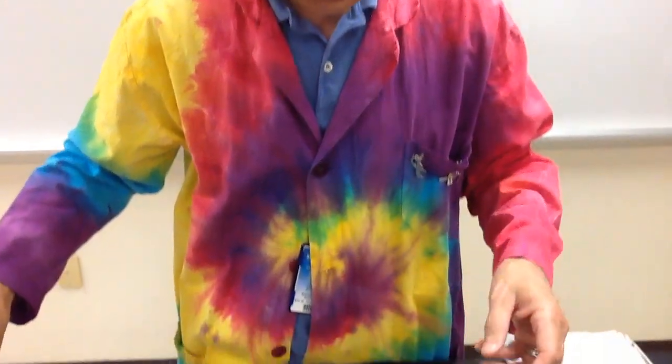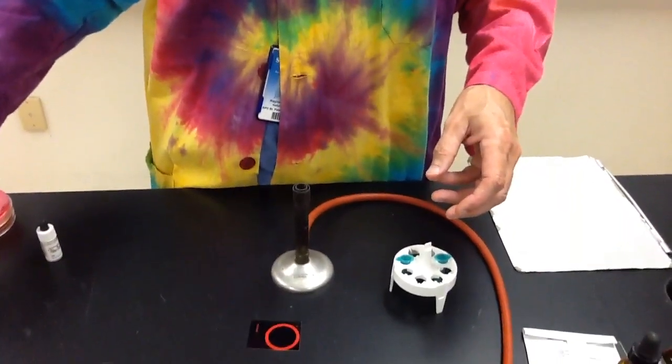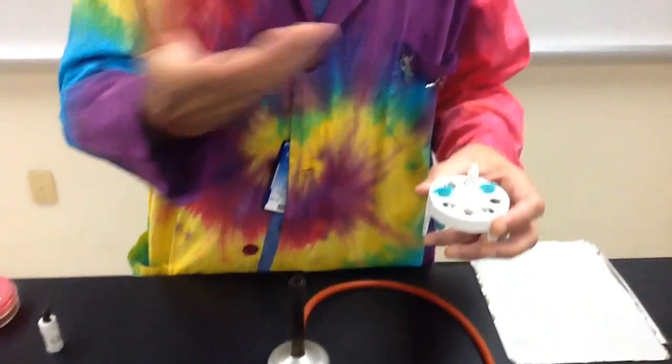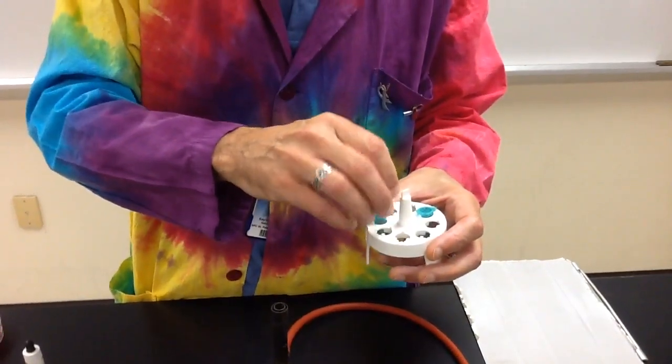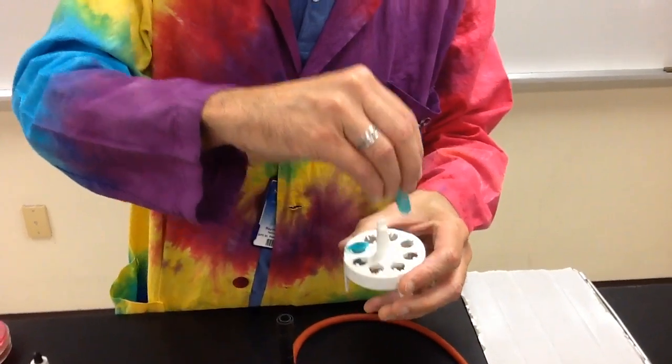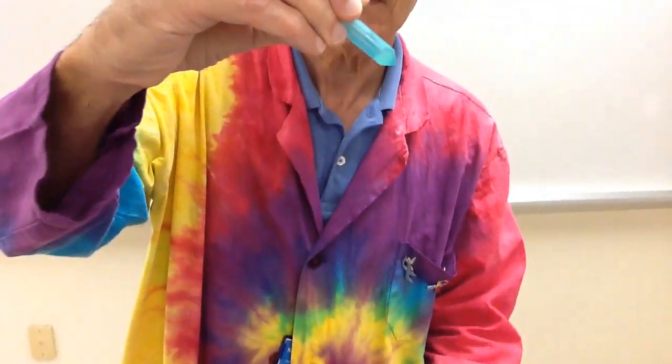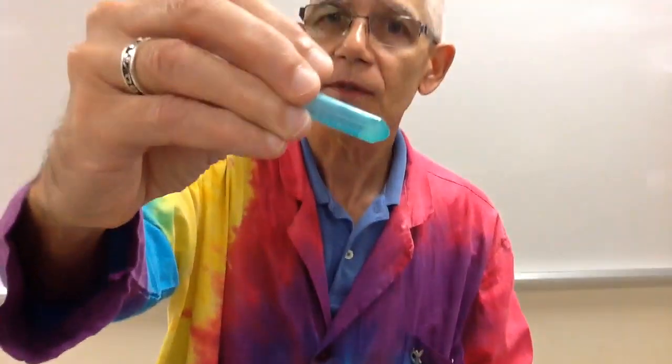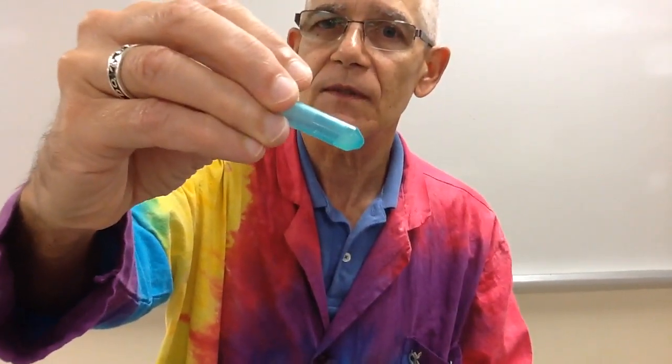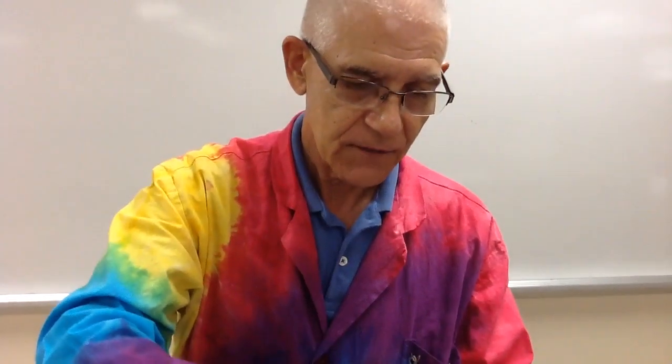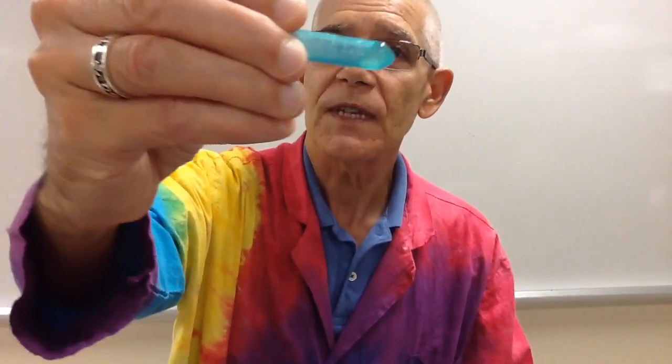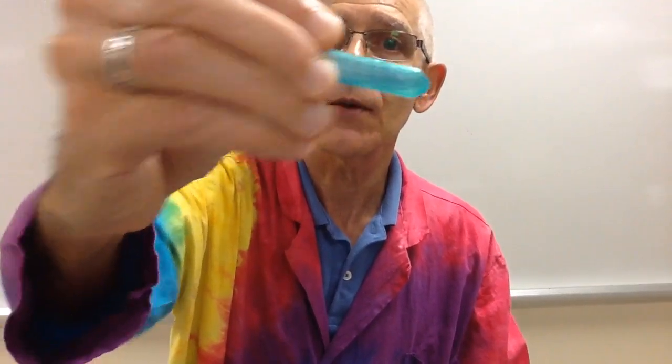Another good test to do is called coagulase, and staph aureus will produce this enzyme, and what coagulase will do is it will actually clump blood. So if you add your bacteria to plasma, and coagulase is produced, you can see it stays solid. However, if it does not produce coagulase, you will see that it turns liquid.